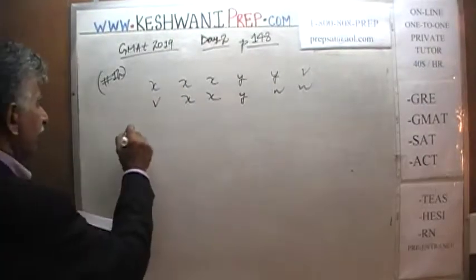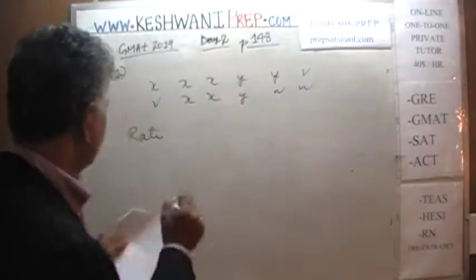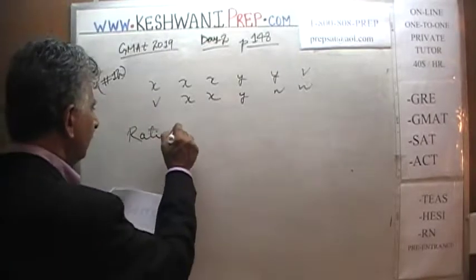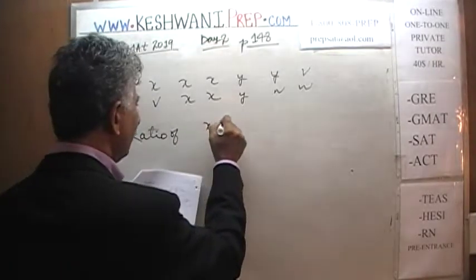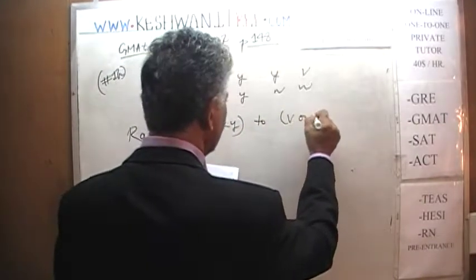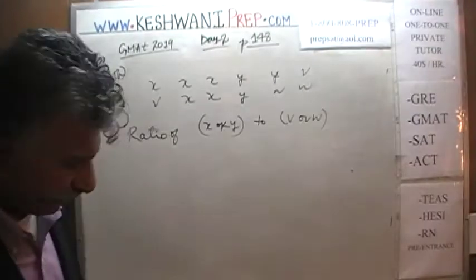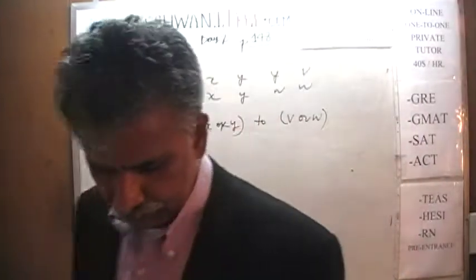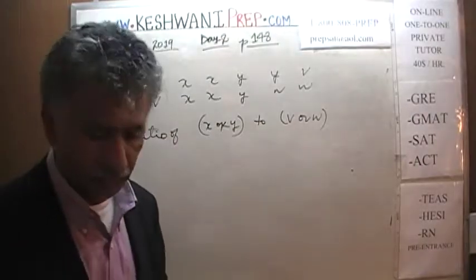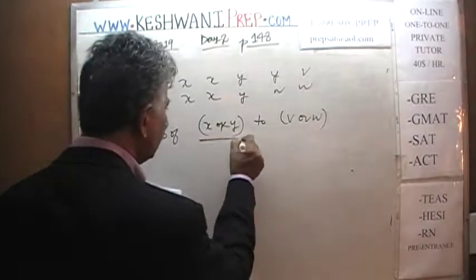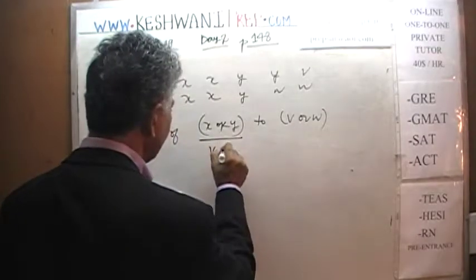The question is very simple. The question is: what is the ratio of x or y to v or w? Let's find out. I'm going to throw away this dying marker. So let's find out the ratio of x or y to v or w.